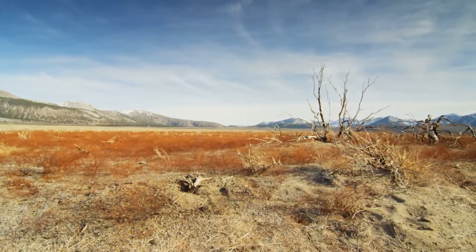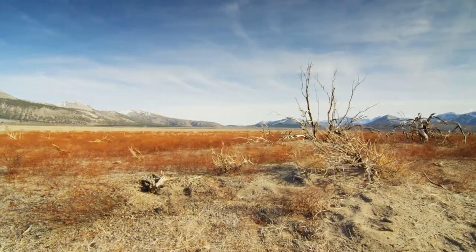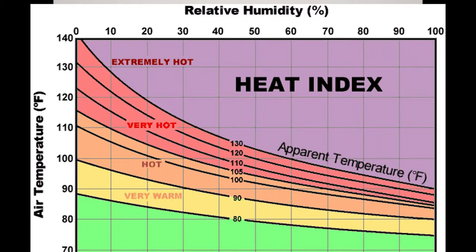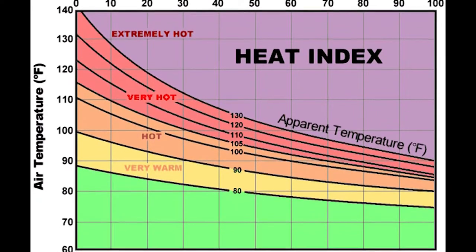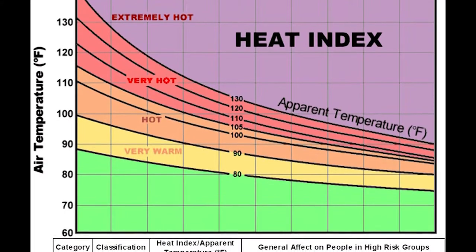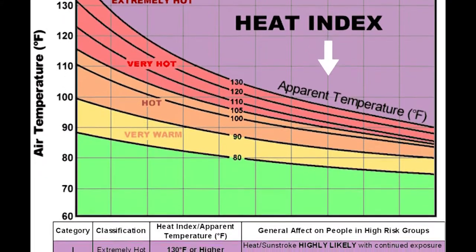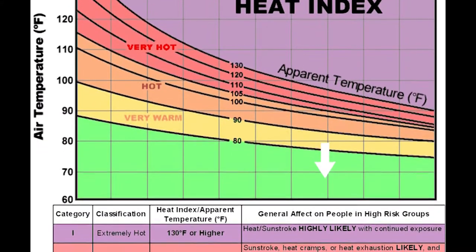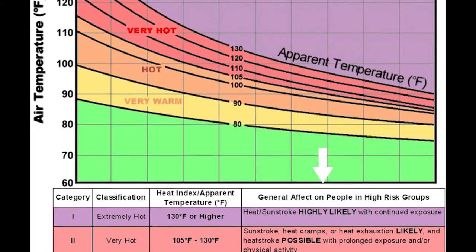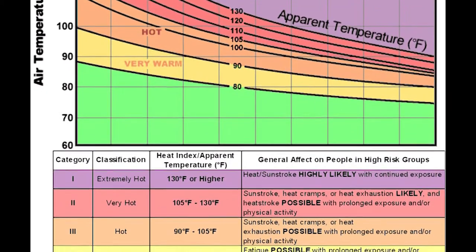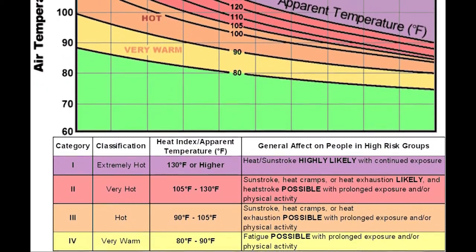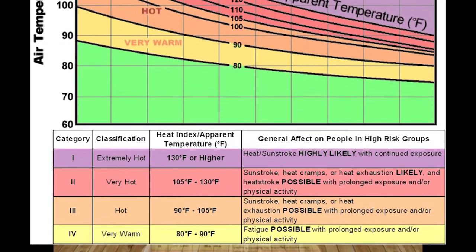There is a direct relationship between air temperature and relative humidity in the heat index: as both increase or decrease, the heat index follows. For example, on a hot day where the air temperature is 90 degrees but relative humidity is 70%, the temperature you will actually feel could be about 105 degrees instead of 90. At that level, you may have a chance of sunstroke, heat cramps, or heat exhaustion — a very dangerous situation.